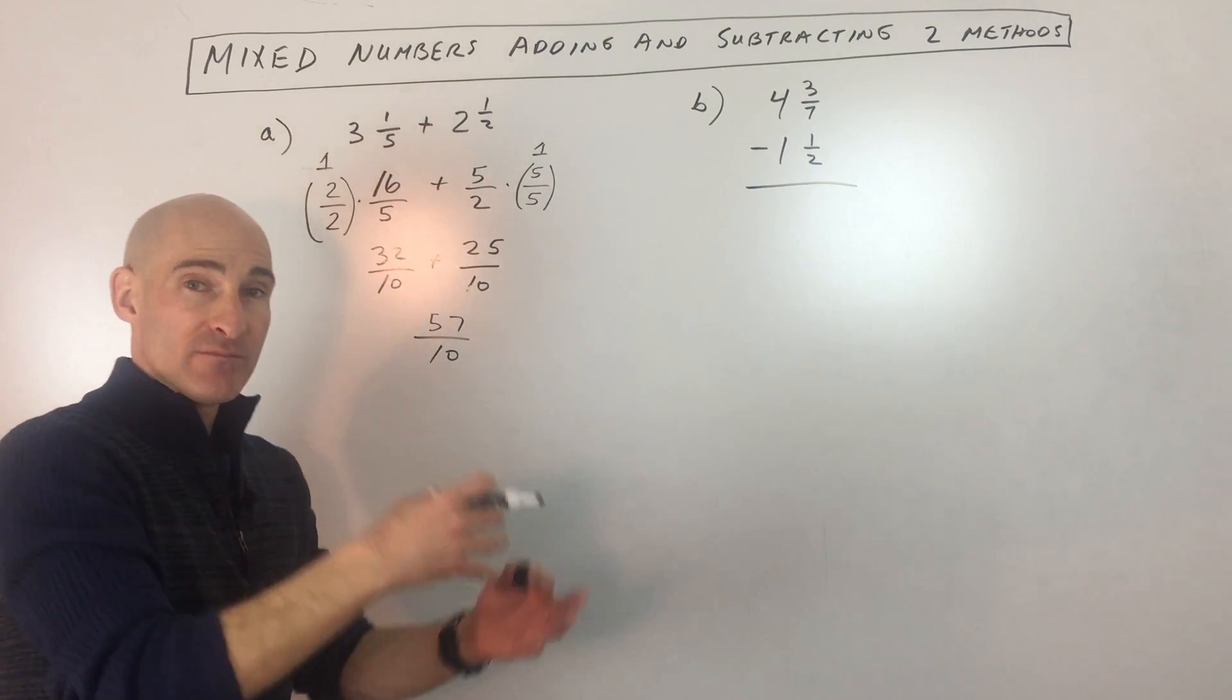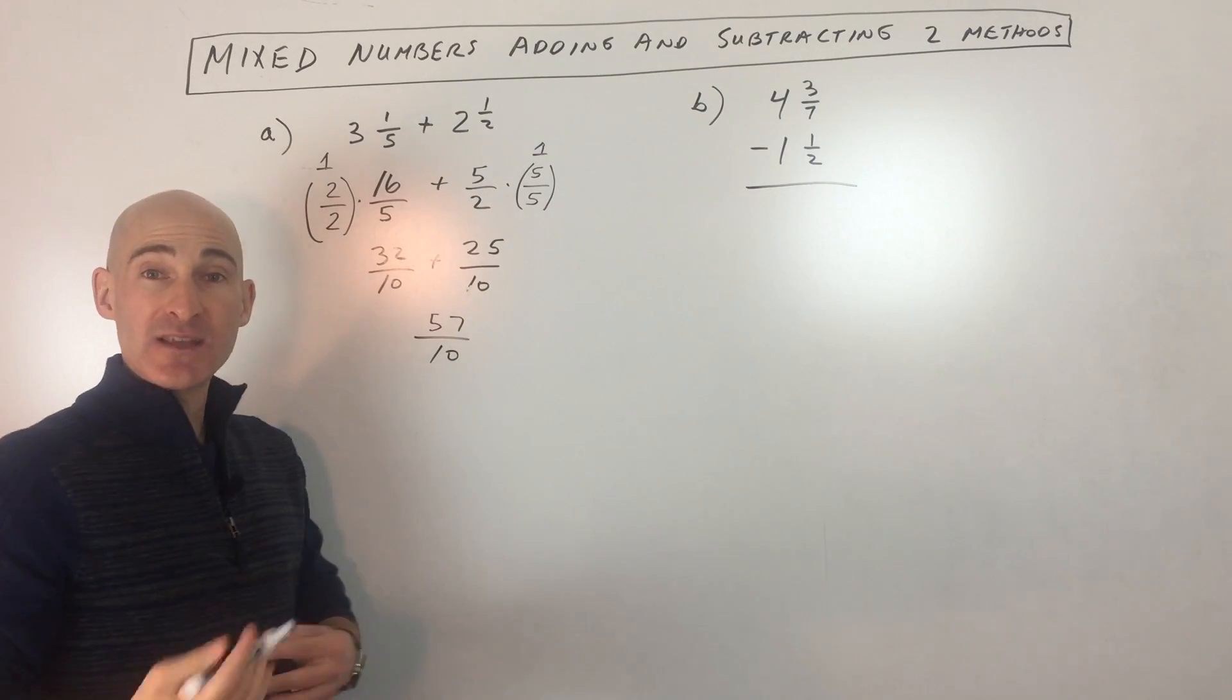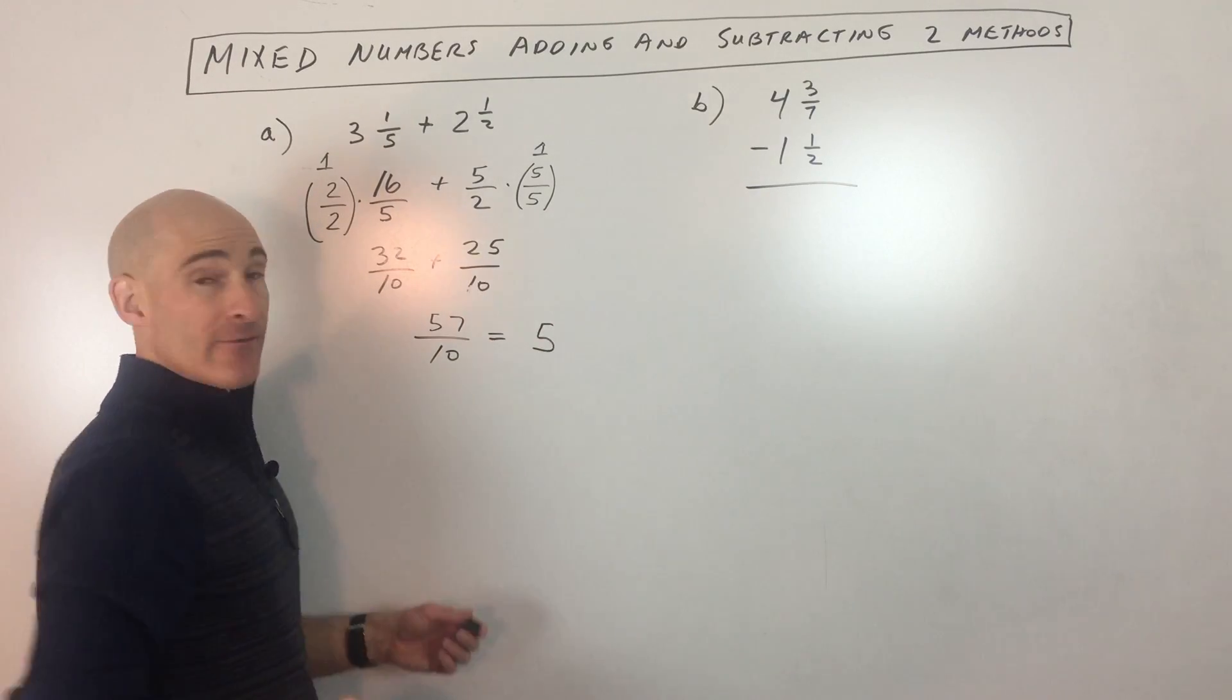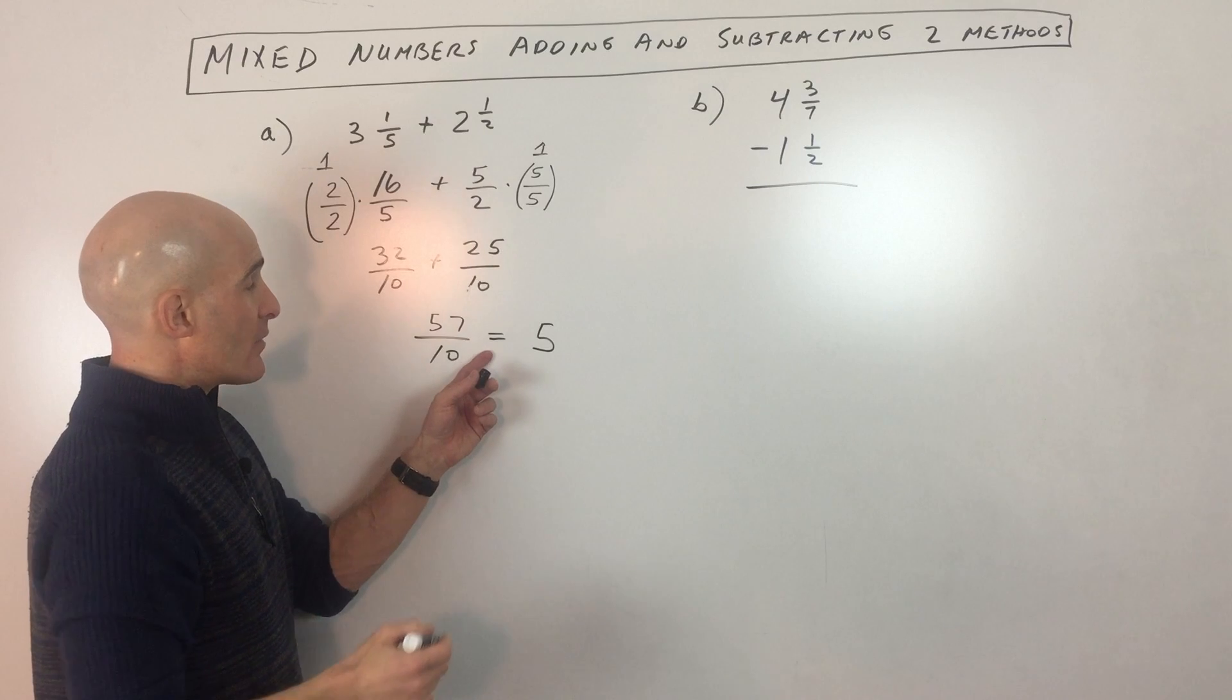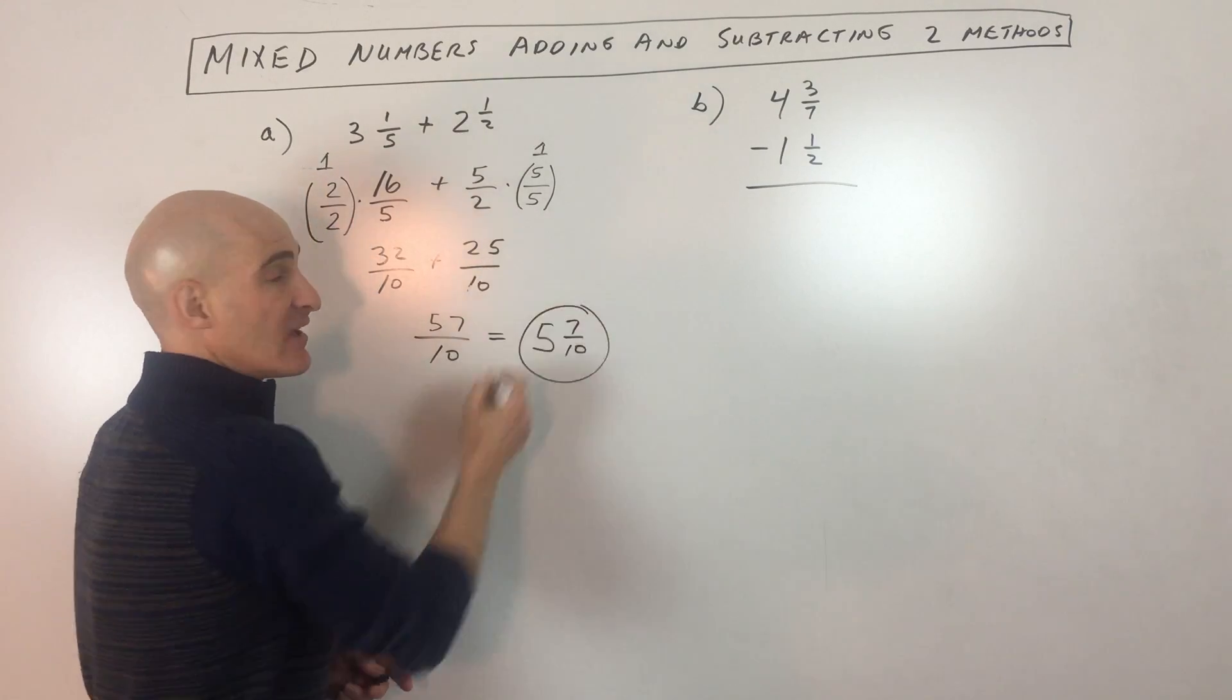But now we want to convert it back into a mixed number because the numerator is larger than the denominator. That's an improper fraction. 10 goes into 57 how many times? Well, five whole times, right, with seven left over. So this is going to be five and seven tenths. And that's our answer.